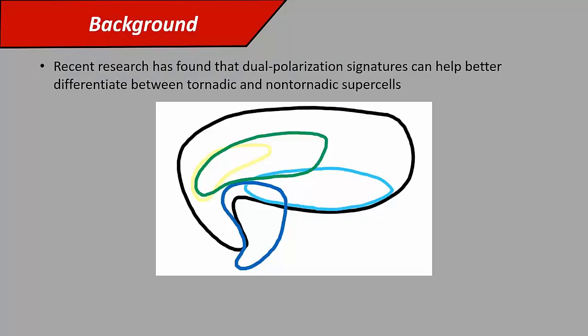Recent research has found that dual-polarization signatures in supercells can potentially be helpful in differentiating between tornadic and non-tornadic storms. I've got my wonderful Microsoft Paint diagram of a supercell here, and I'm just going to go through a quick review of the different dual-pole signatures that we'll be looking at in this study.